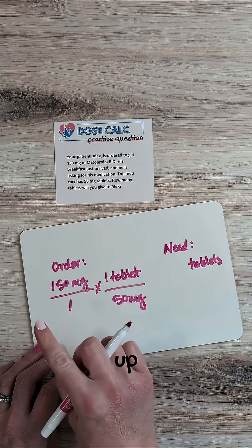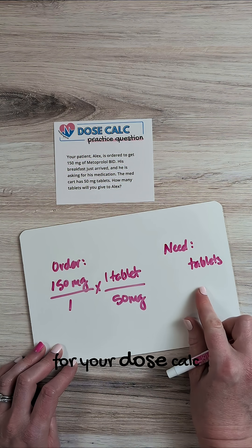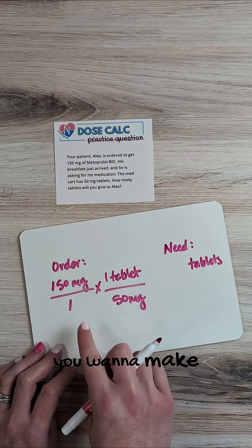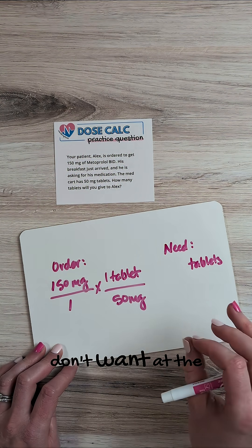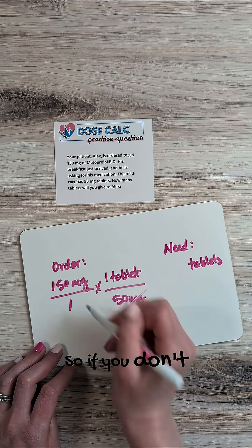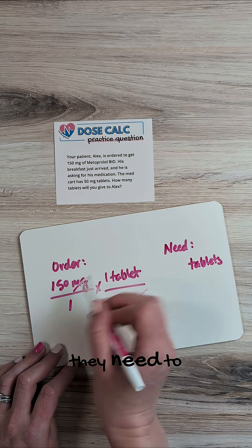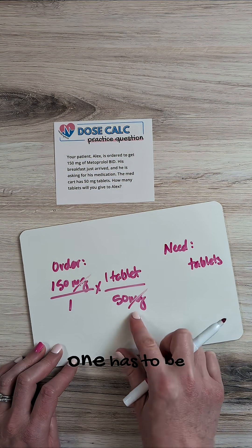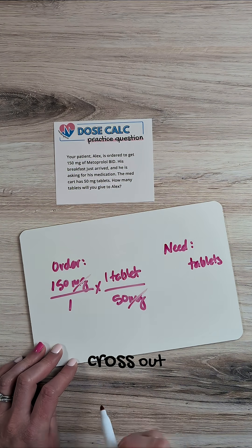Now, anytime you set up dimensional analysis like this for your dose calc exams, you want to make sure that the units you don't want at the end, you want those to cross off. So if you don't want them at the end, they need to cross out. One has to be at the top, one has to be at the bottom, and they have to cross out.